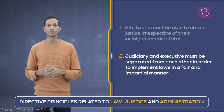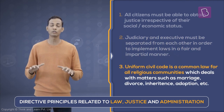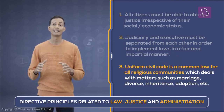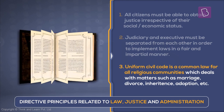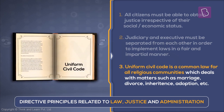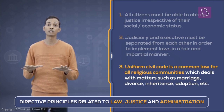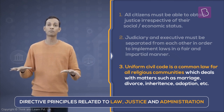Another directive principle talks about having a uniform civil code for all the citizens of our country. This means that there is a single law for the entire country, applicable to all religious communities in their personal matters such as marriage, divorce, inheritance, adoption, etc. The intent of this directive was to reduce the number of differences between all the people in our country.